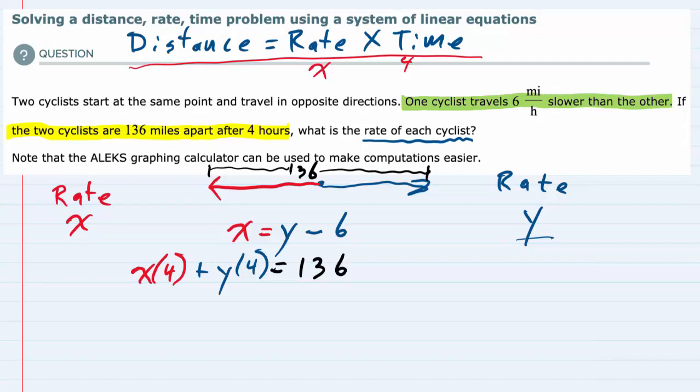And now we have two equations. And the second equation can be cleaned up a little bit. x times 4 is just 4x. y times 4 is just 4y equals 136.